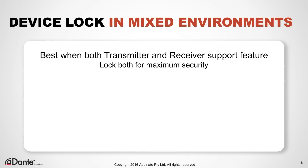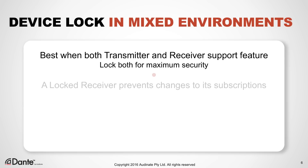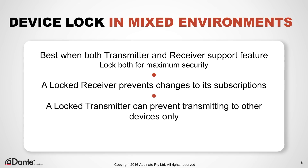Device Lock works best when both transmitting and receiving devices support the feature. However, we know that many times not all devices on a network will be updated. In Dante, receivers request channels from transmitters and maintain subscription status. A locked receiver can have none of its subscriptions changed. A locked transmitter knows only what devices it was transmitting to when it was locked.